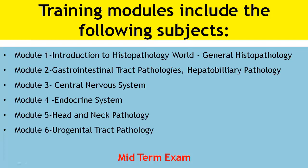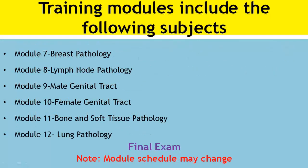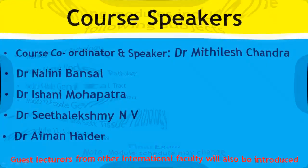Training modules include the following subjects: introduction to histopathology, general histopathology, gastrointestinal tract pathology, hepatobiliary pathology, central nervous system, endocrine system, head and neck pathology, urogenital tract pathology, breast pathology, lymph node pathology, male genital tract, female genital tract, bone and soft tissue pathology, and lung pathology.